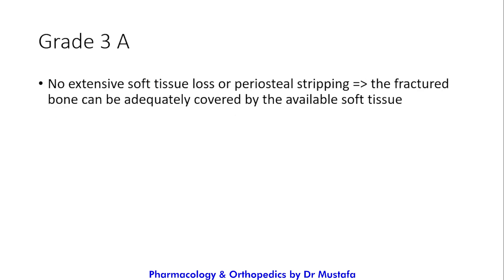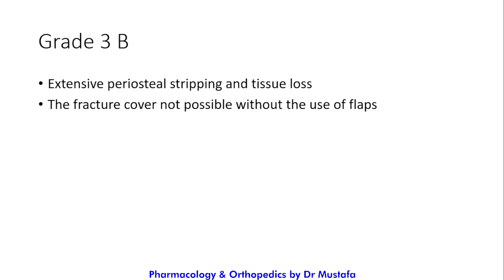Grade three A: there is no extensive soft tissue loss or periosteal stripping. Periosteal stripping is when the periosteum is stripped from the bone. The periosteum contains the vascular supply to the bone, so if it is stripped away the bone loses its blood supply, leading to bone necrosis and subsequently infection. In grade three A there is no extensive periosteal stripping, and the fractured bone can be adequately covered by the available soft tissue.